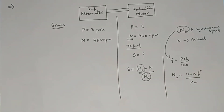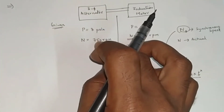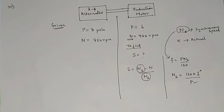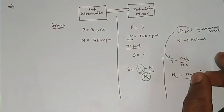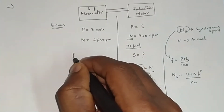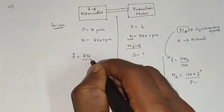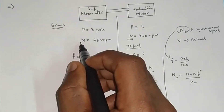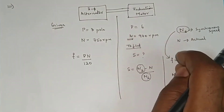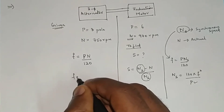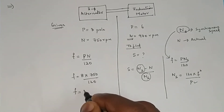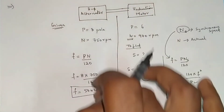For the induction motor, frequency is not given but number of poles is given. Looking at the alternator, both pole and speed data are given, so we can find frequency using the alternator formula: f = P × N / 120. In the alternator chapter, there is only one speed — the actual speed. So: f = 8 × 750 / 120, which gives frequency = 50 Hz.